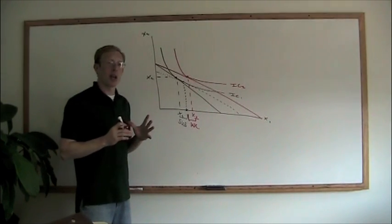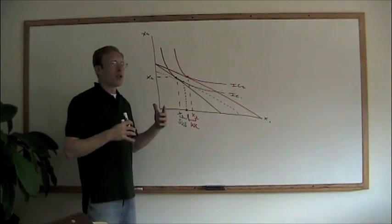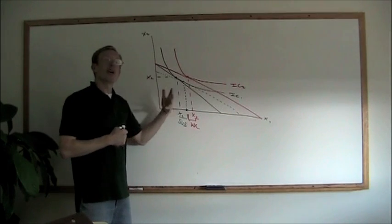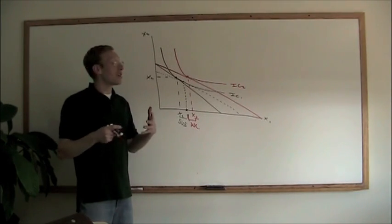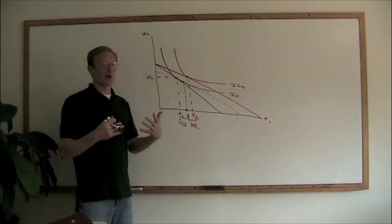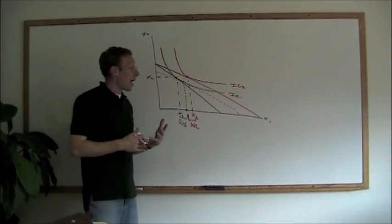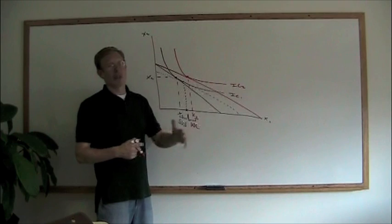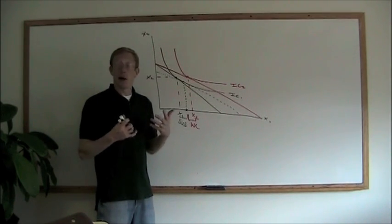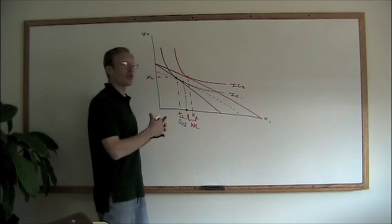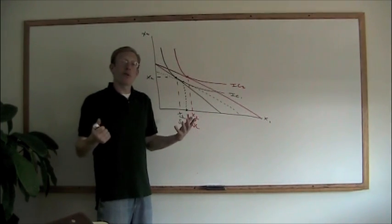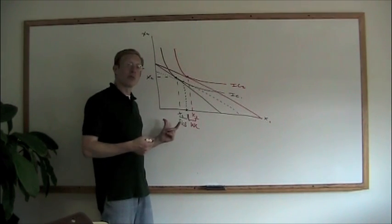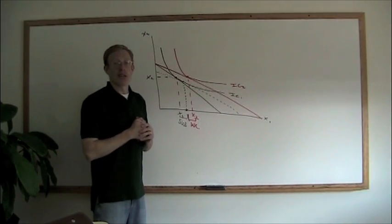The Slutsky approach and the Hicksian approach give you the same outcome — almost identically the same outcome if the price changes are relatively small — but they look at it from two different perspectives. Which one you choose is really up to you; whichever one you feel more comfortable with is fine, unless the problem is very specific about whether the Slutsky or Hicksian approach will be a better tool. Each one of these approaches will usually give you the same answer — they're just two different sides of the coin to solving what part of the price change is attributable to the substitution effect and which is attributable to the income effect.